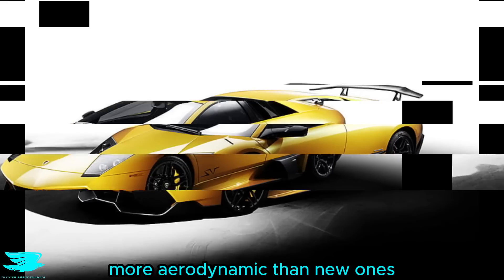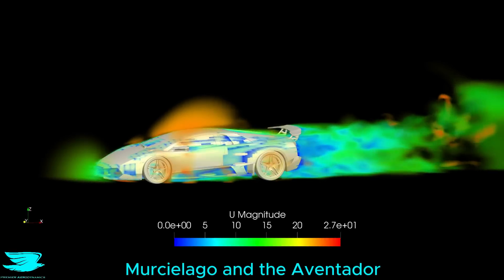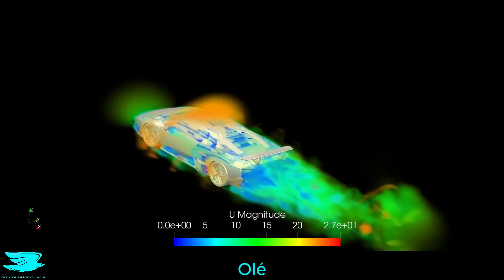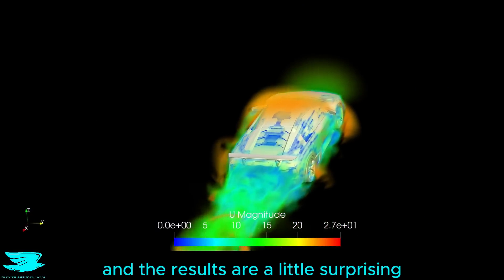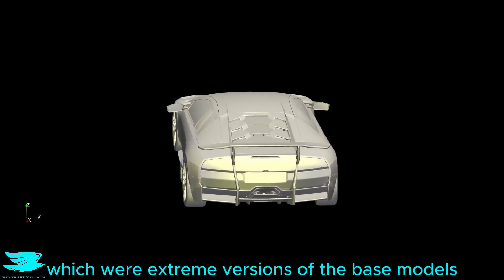Were old Lamborghinis more aerodynamic than new ones? To find out, we did simulations of the Murciélago and the Aventador. And the results are a little surprising. Note that both of these were the Super Veloce Editions, which were extreme versions of the base models.